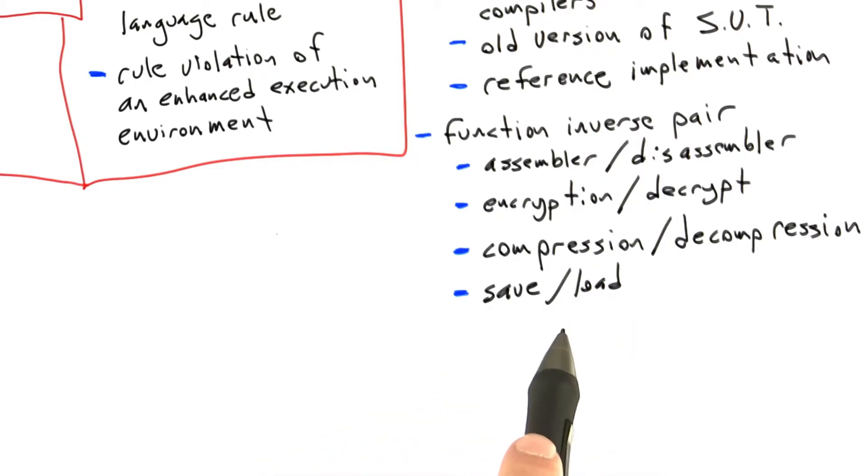Or maybe, perhaps, we forgot to save part of the program's state, and then when we load it, we'll end up in a different state. We'll be able to catch that by treating save and load as a function inverse pair.